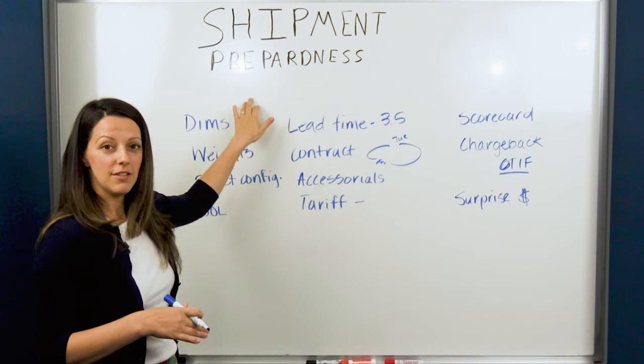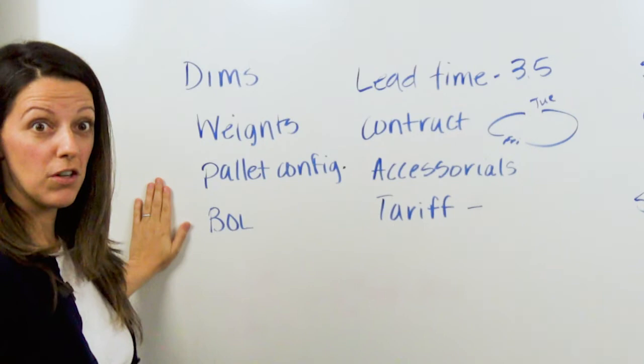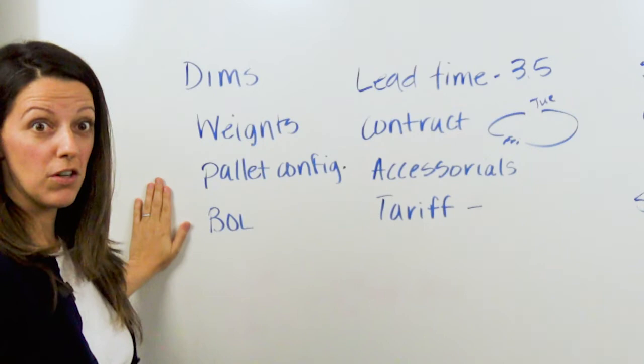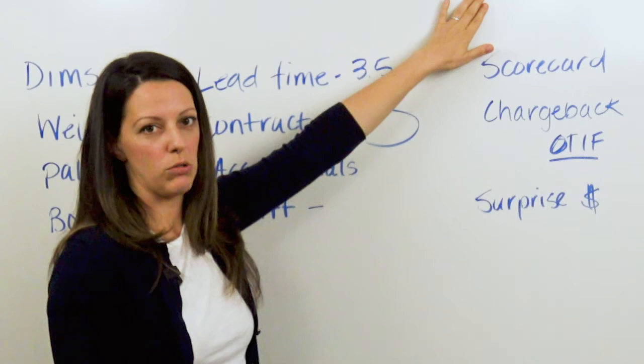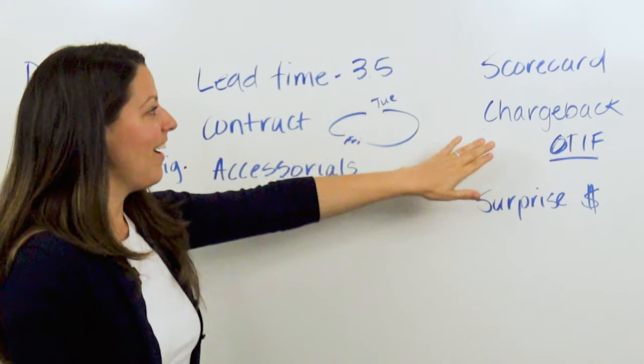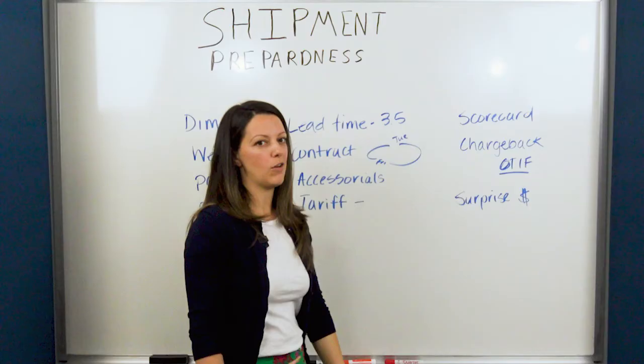So to wrap things up, these are the three pillars that I would consider critical to shipment preparedness. So the physical, having all your ducks in a row in advance, the non-physical contractual understanding lead time, setting up your carriers for success to the desired outcome. This is what we're shooting for: good scorecards across the board, carrier and vendor alike, chargebacks reduced as possible, and then reducing your surprise charges. So this is Jess Apostolou from Freight Plus. Thank you so much for tuning in.